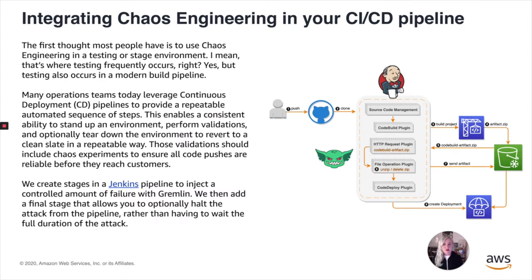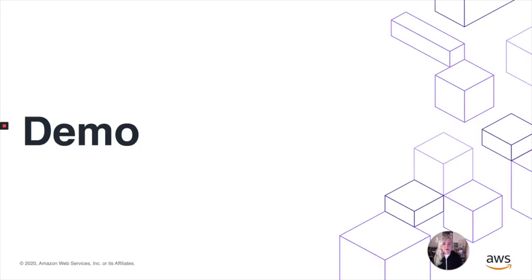We'll actually be using stages in Jenkins to inject a controlled amount of failure. We'll specify the parameters and then add another final stage that allows you to optionally halt the attack as you observe it. You can do this in an automated way as well — for example, if you notice a failure, you can fail the deploy on purpose, or you can just send an alert saying what happened.